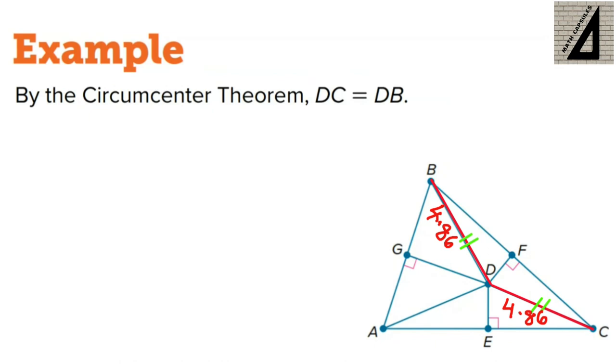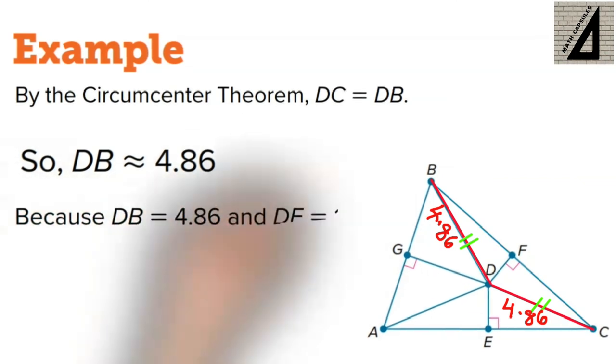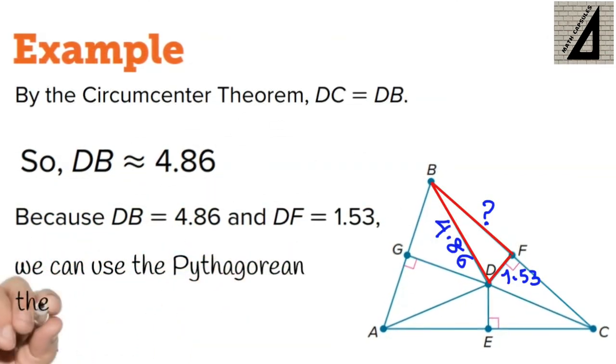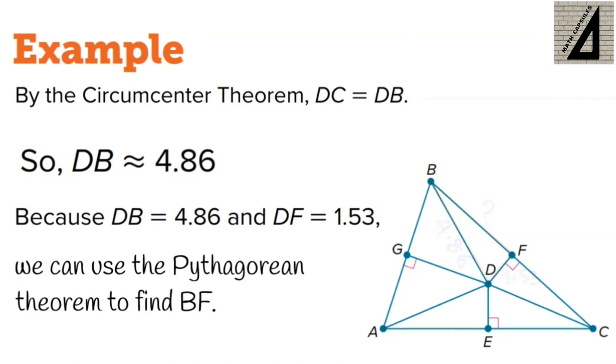And because D is the circumcenter, by the circumcenter theorem DC equals DB, because it is equidistant from the vertices of the triangle. So, DB is 4.86, and in triangle DBF we can find BF by Pythagorean theorem as well.